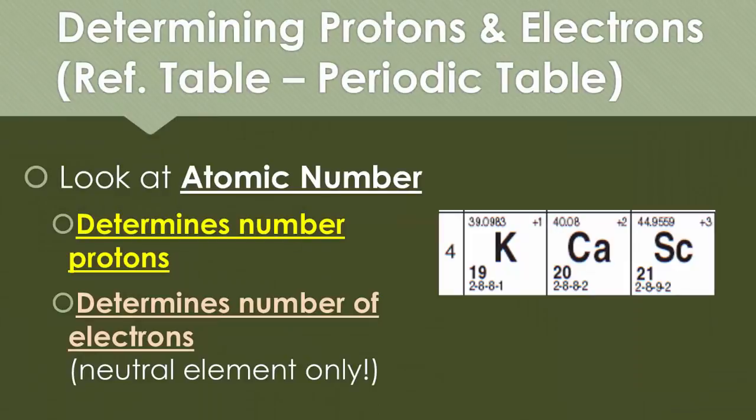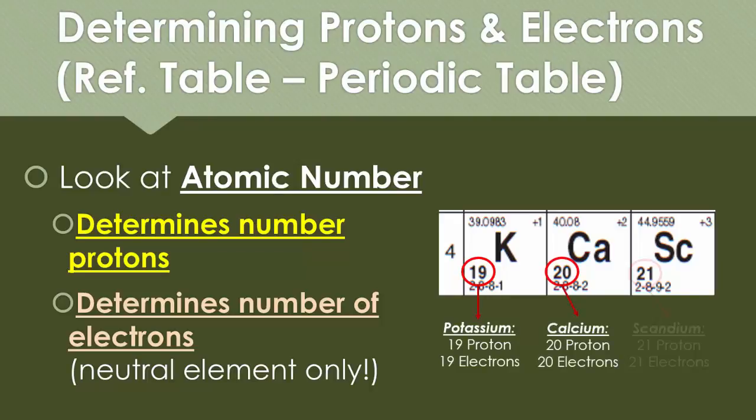Now, we determine the number of electrons from the atomic number because the number of protons is going to be equal to the number of electrons because every atom is considered neutral, and everything that you see on the periodic table is neutral. So potassium has 19 protons, which means it also has 19 electrons. Calcium has 20 protons, it also has 20 electrons. Scandium has 21 protons, 21 electrons.